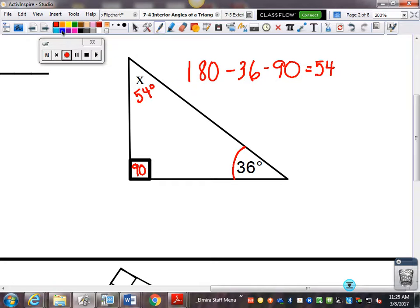Again, some of you prefer to take 90 plus 36, and get 126. And then, 180 minus 126 equals 54. Doesn't matter. Either way.